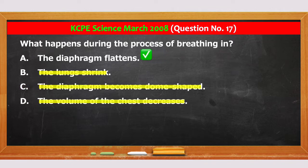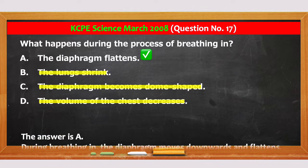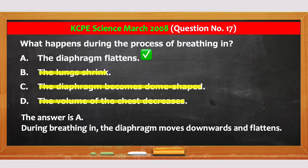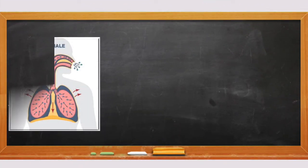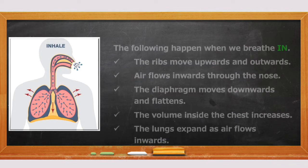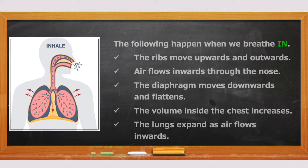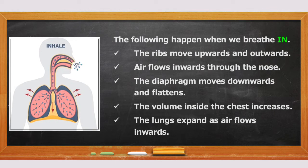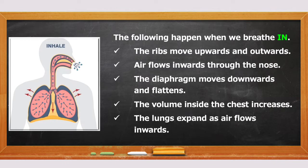The answer is A. During breathing in, the diaphragm moves downwards and flattens. The following happens when we breathe in: the ribs move upwards and outwards; air flows inwards through the nose; the diaphragm moves downwards and flattens; the volume inside the chest increases; and the lungs expand as air flows inwards.